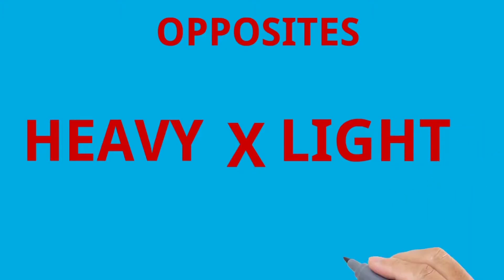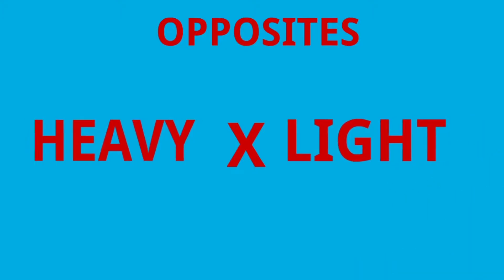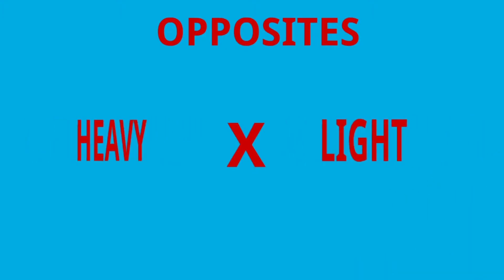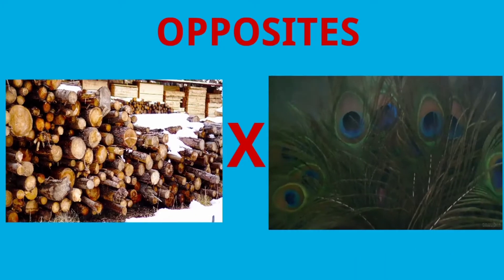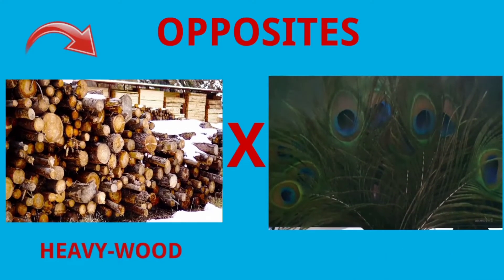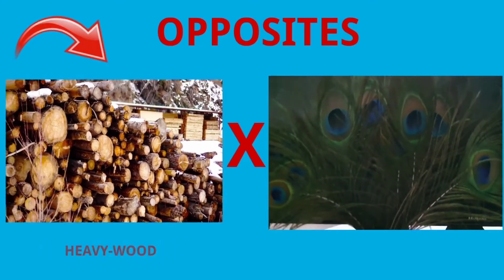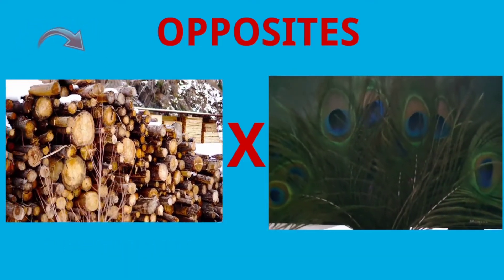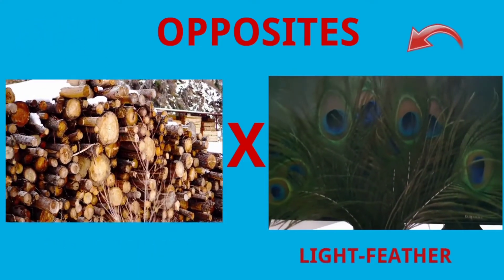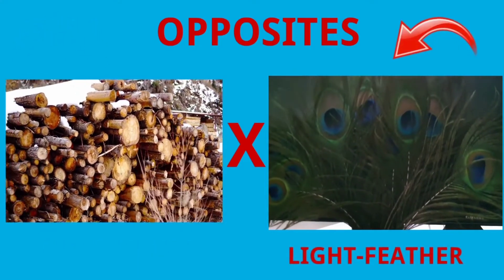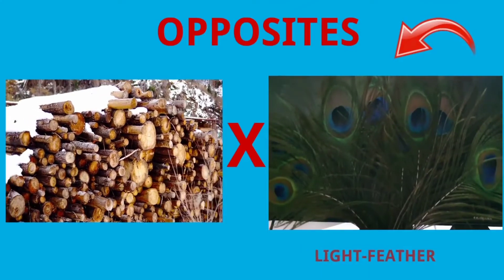Heavy. Light. Wood is heavy weight. Feather is light weight.